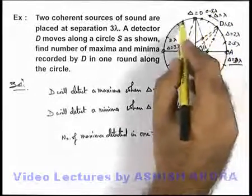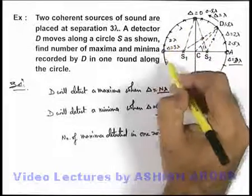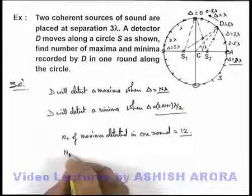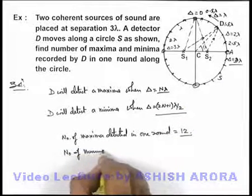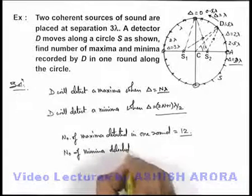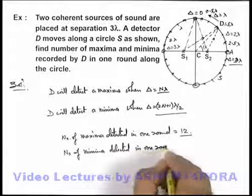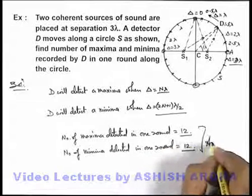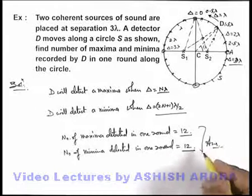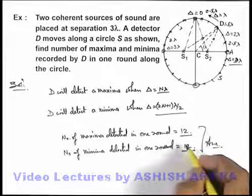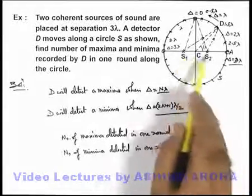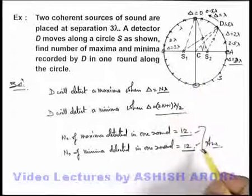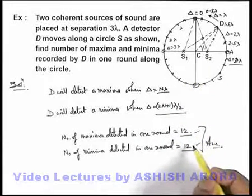Similar to this, there are 3 locations in each quadrant where path difference is an odd multiple of lambda by 2. So we can write: the number of minima detected in 1 round by the detector will also be 12. That will be the answer to this problem. We can see that the number of these locations depends on the separation between the 2 sources. As it changes, this is the way we calculate the total number of maxima and minima observed by the detector in going round the circle.